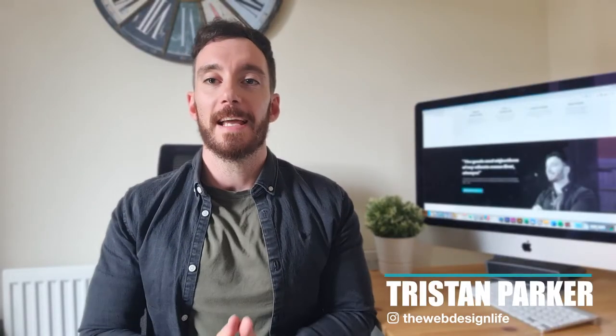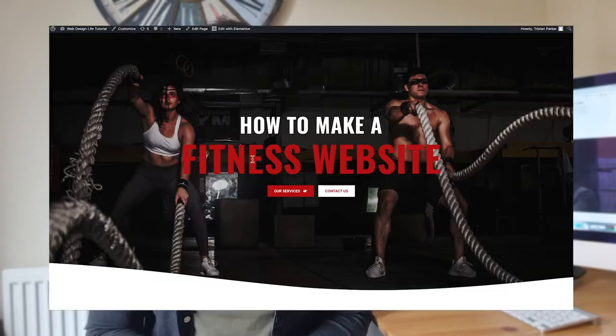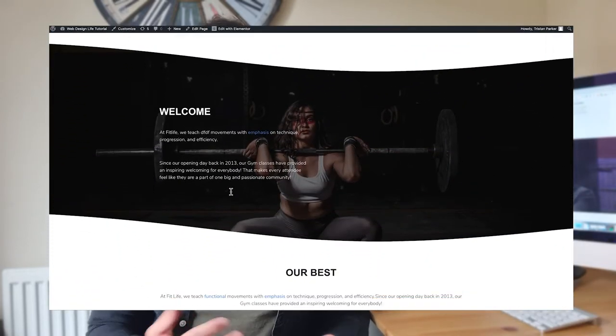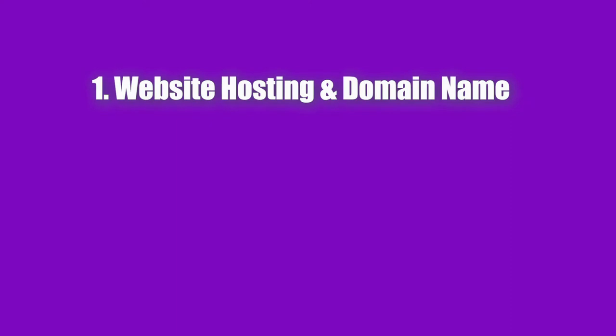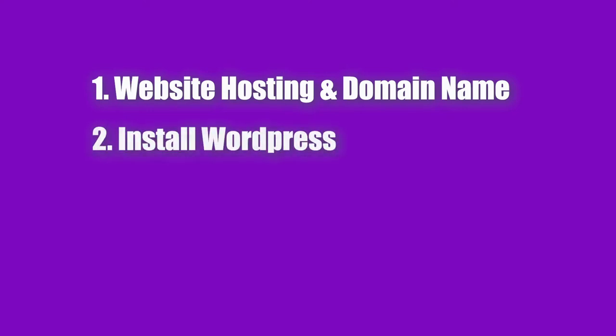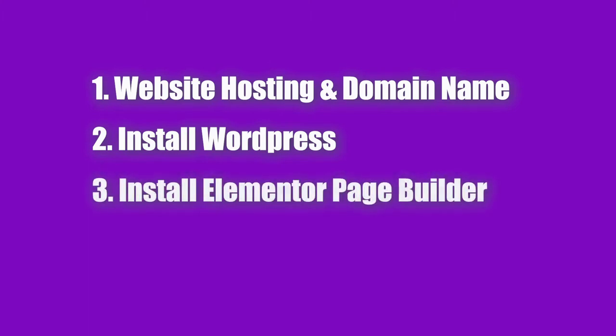Hey, Tristan Parker here. Today I'm going to show you step by step how to create your own fitness or gym website using WordPress. We're going to be using Elementor, and I'll show you how to get set up in just a few simple steps. We'll start by covering website hosting and your own personal domain name, then install WordPress, then install Elementor, the page builder we'll use to make the website look awesome.